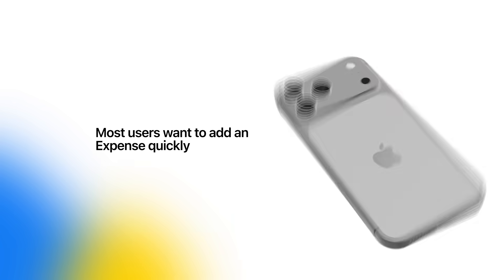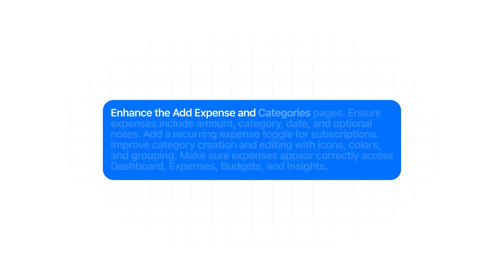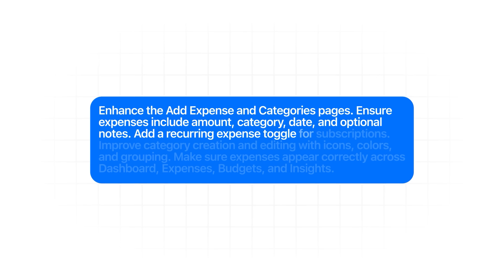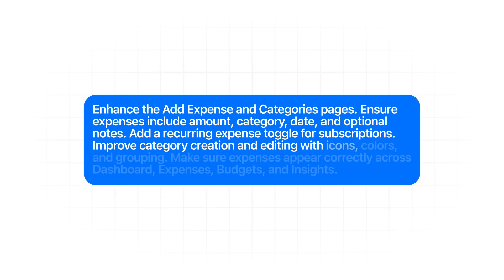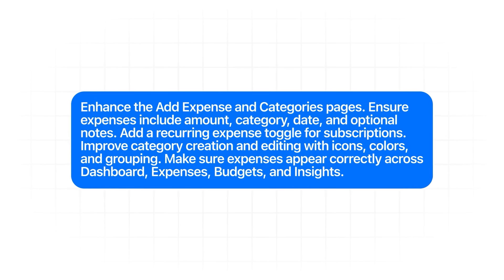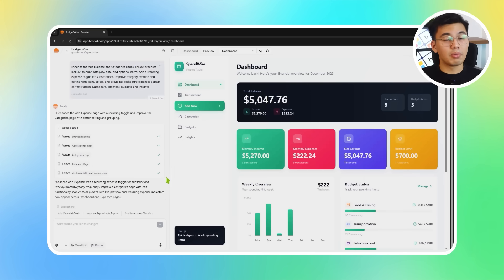Most users want to add an expense quickly, choose the right category, drop a note if needed, and trust that everything shows up exactly where it should — on the dashboard, in their budgets, and inside insights. Here we'll put together the real financial engine of the app and connect every part of the experience so the data flows naturally. We'll prompt Base44 with: enhance the add expense and categories pages, ensure expenses include amount, category, date, and optional notes, add a recurring expense toggle for subscriptions, improve category creation and editing with icons, colors, and grouping, and make sure expenses appear correctly across dashboard, expenses, budgets, and insights.